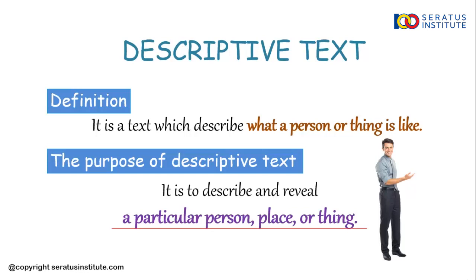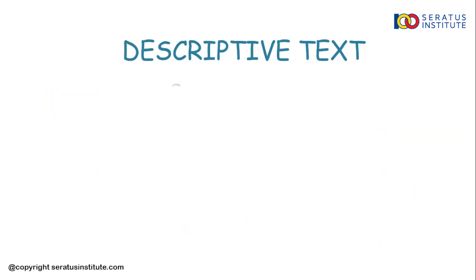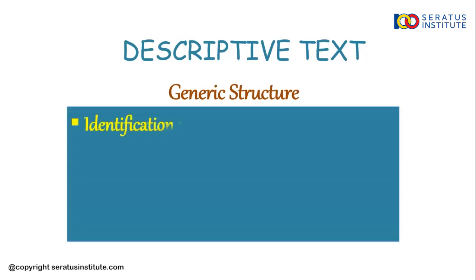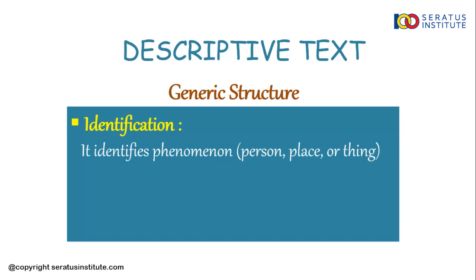Jadi, di sini kita akan menjelaskan dan mengungkapkan seperti apa karakteristik dari seseorang, benda, atau suatu tempat. Next Sobat Seratus, we will discuss about the generic structure of descriptive text. Actually, there are only two parts of the generic structure in descriptive text. The first is identification — it identifies phenomenon such as person, place, or thing.